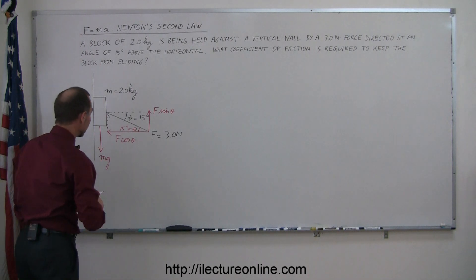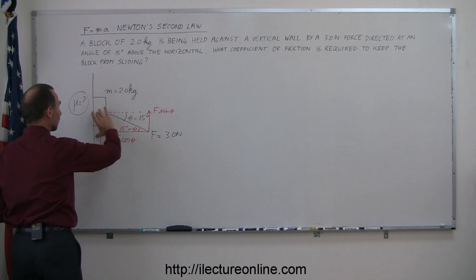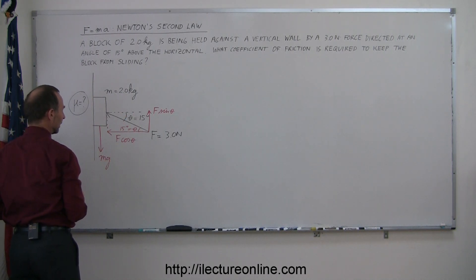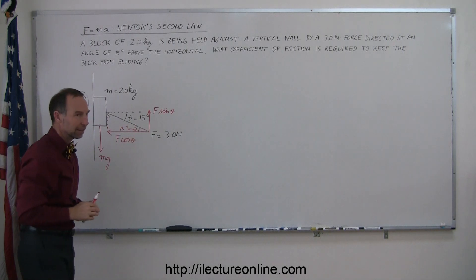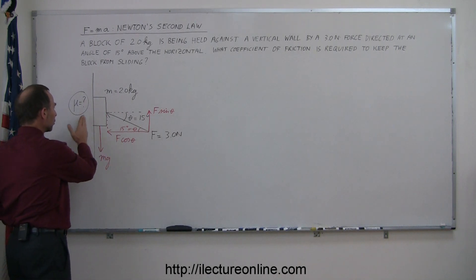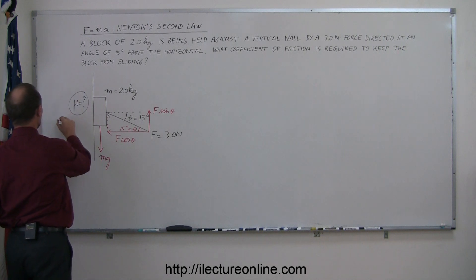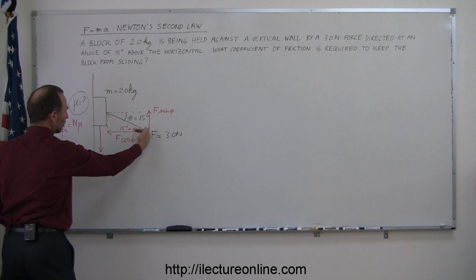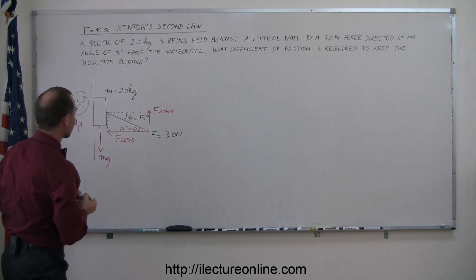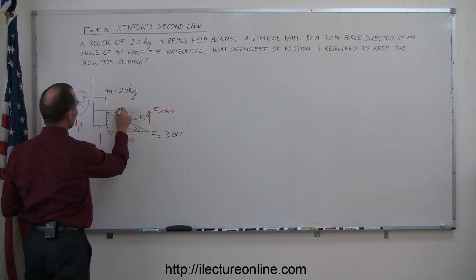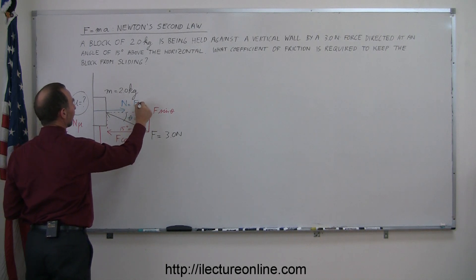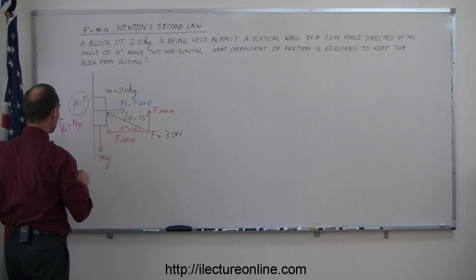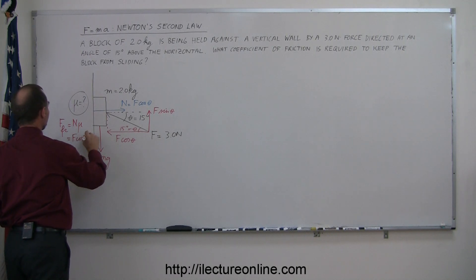Looking at this diagram, if mg is bigger than f sine theta, the block will slide down. If f sine theta is bigger than mg, the block will slide up. With m = 2 kg and g = 9.8 m/s², mg will indeed be bigger than f sine theta, so the block is expected to slide down. Since there's friction between the block and the wall, there will be a friction force equal to the normal force times mu. The normal force equals f cosine theta, so the friction force equals f cosine theta times mu.